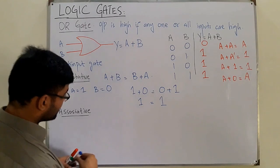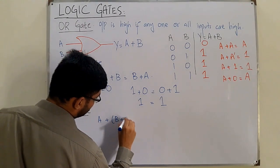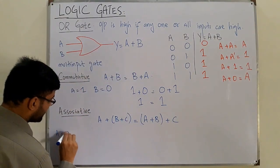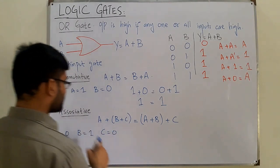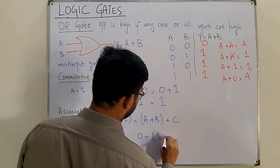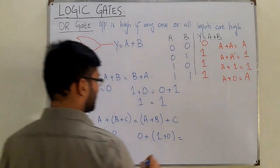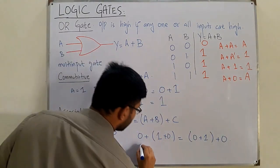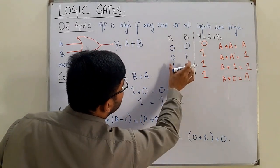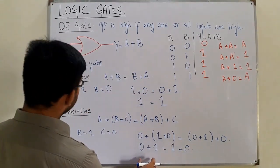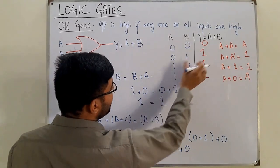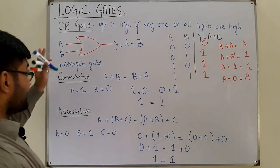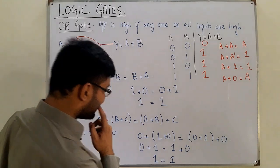For the associative law: A OR (B OR C) = (A OR B) OR C. Let A = 0, B = 1, C = 0. Left: 0 OR (1 OR 0) = 0 OR 1 = 1. Right: (0 OR 1) OR 0 = 1 OR 0 = 1. Left equals right, so the OR gate also satisfies the associative law.